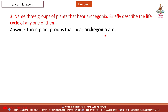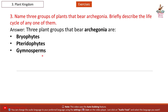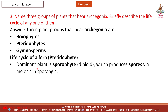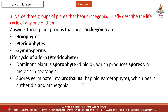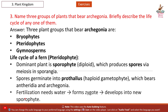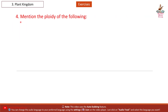Three plant groups that bear archegonia are: bryophytes, pteridophytes, and gymnosperms. Life cycle of a fern (pteridophyte): the dominant plant is the sporophyte (diploid), which produces spores via meiosis in sporangia. Spores germinate into a prothallus (haploid gametophyte), which bears antheridia and archegonia. Fertilization requires water, forms a zygote, and develops into a new sporophyte.